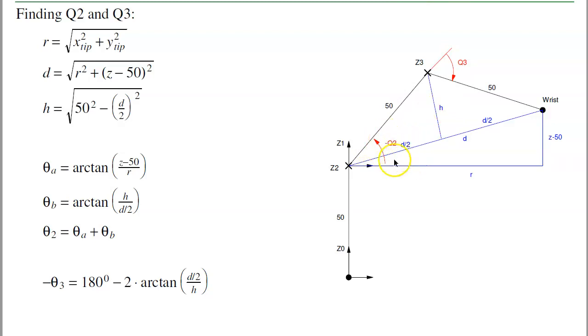Then theta 2 is just minus theta a plus theta b. And if you work it out, theta 3 is 180 degrees minus 2 times this angle.